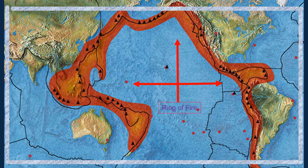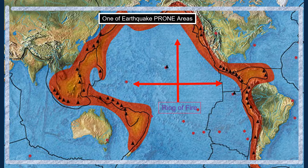This is the Ring of Fire — the entire red highlighted area on the map. It is one of the most earthquake-prone areas in the world.